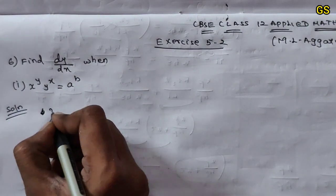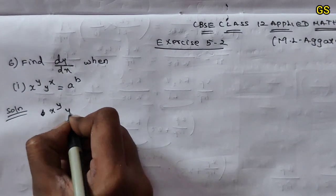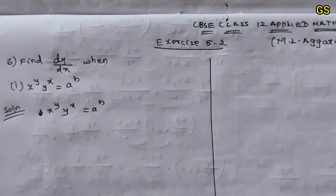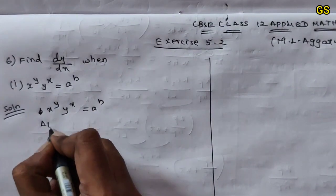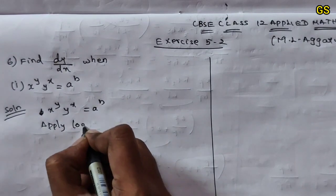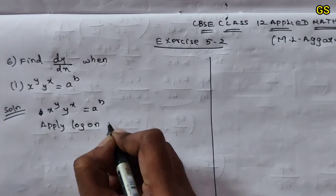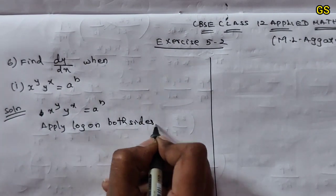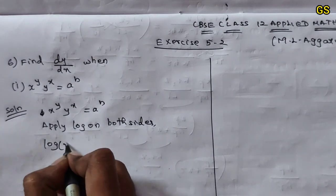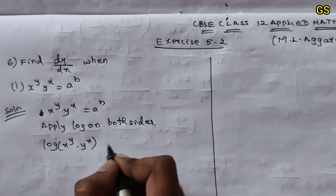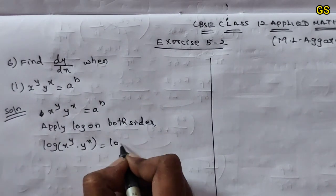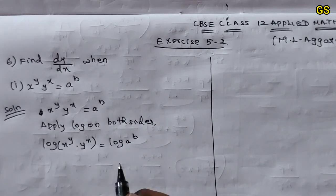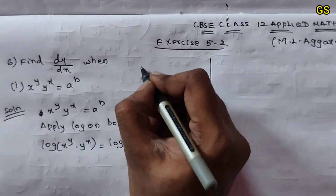We have x power y times y power x equal to a power b. Apply log on both sides. Log of x power y into y power x is equal to log of a power b. Now recall the log property.